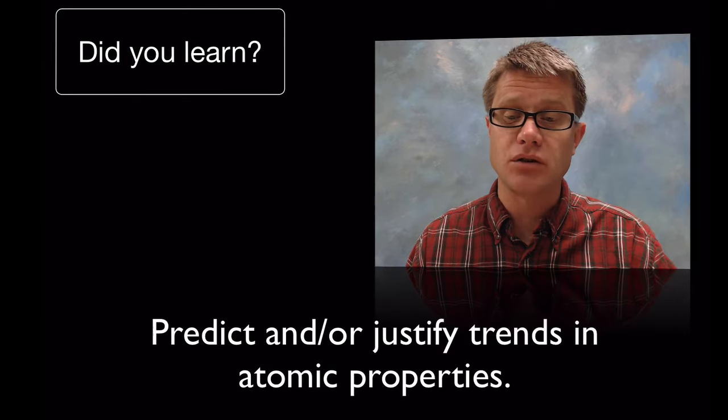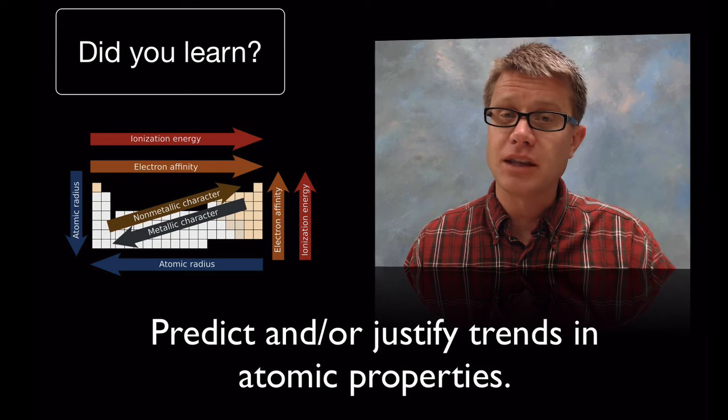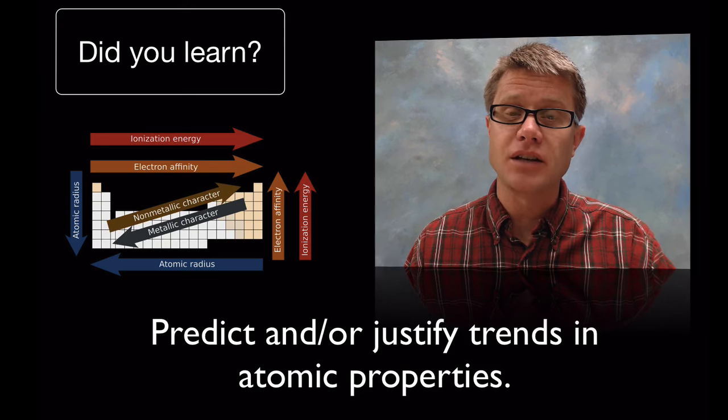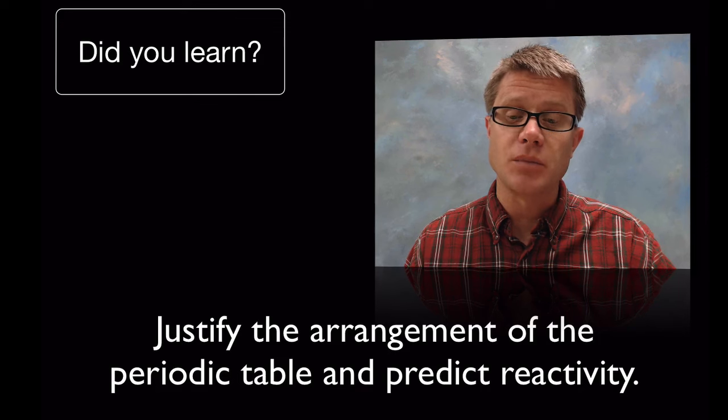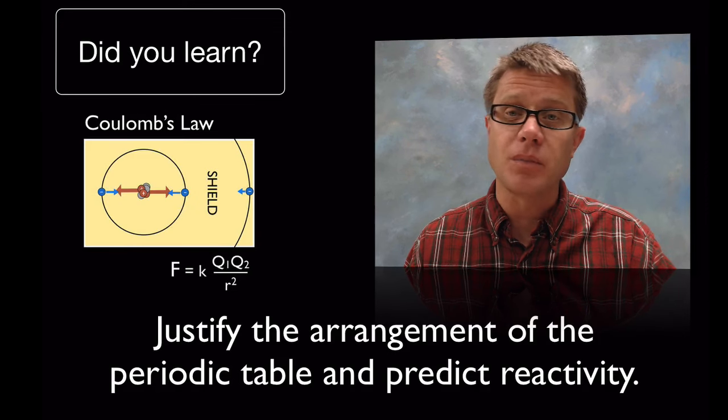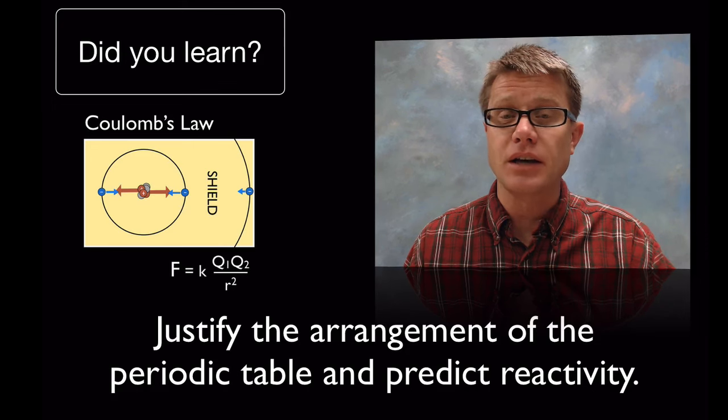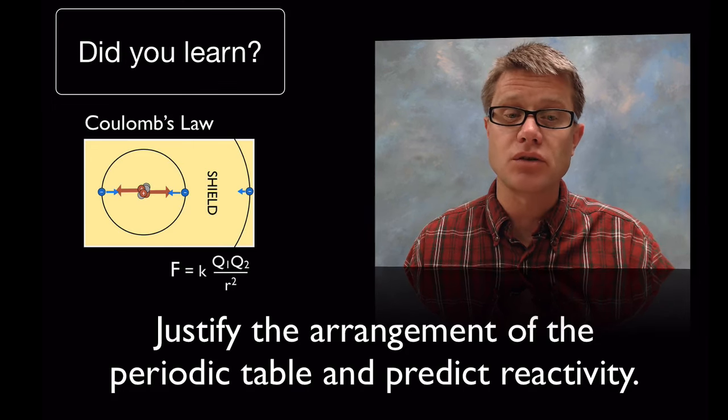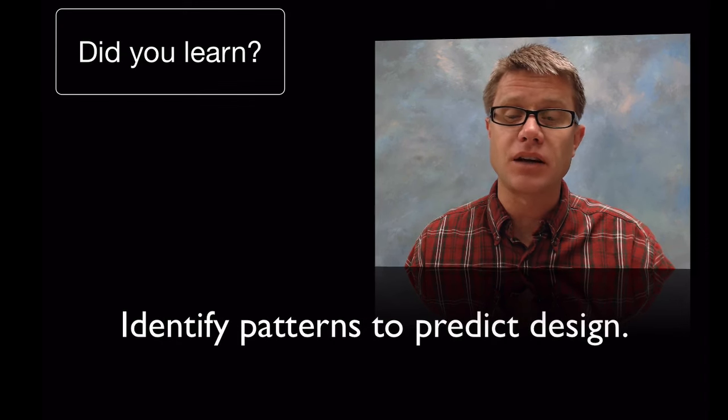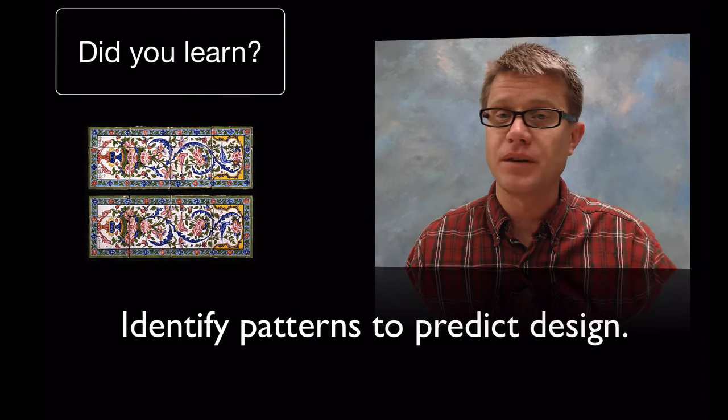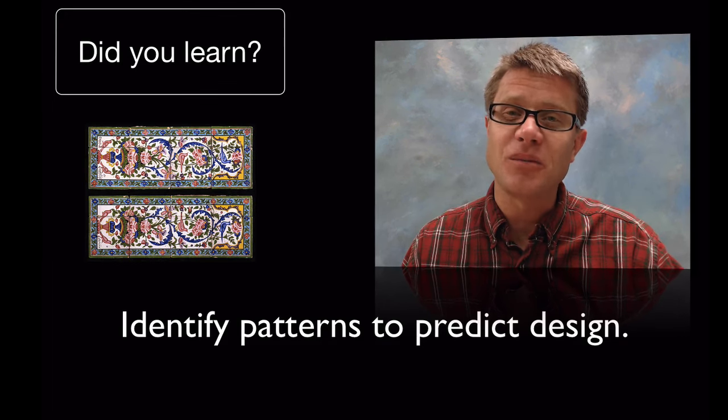So you should have learned to predict or justify trends in atomic properties. Where would I point you if you didn't get that? Remember looking at this chart and seeing how ionization and electronegativity change. If we were to look at justifying the arrangement based on reactivity, it all goes back to Coulomb's law. And remember the bigger the charges are the bigger the ionization energy or the bigger the force holding the electrons in place is going to be. But there's also the shielding effect. And then remember we can identify patterns to predict design, and the example of silicon and tin oxides are an example of that. So that's periodicity and I hope that was helpful.